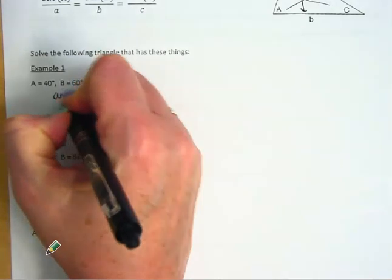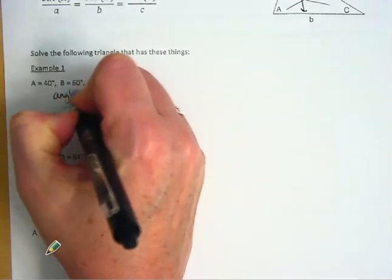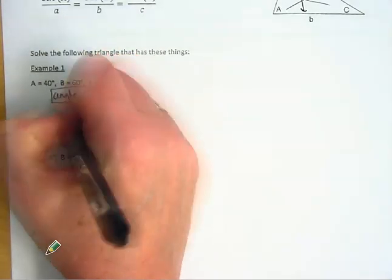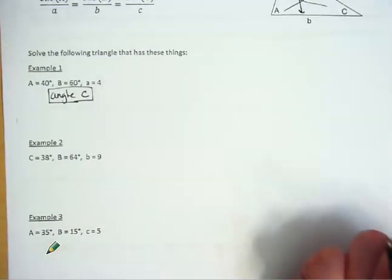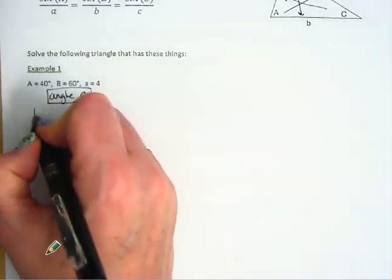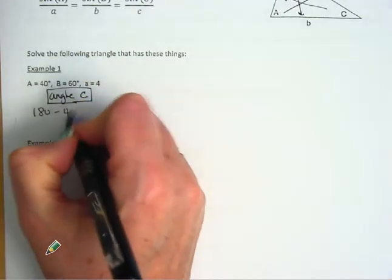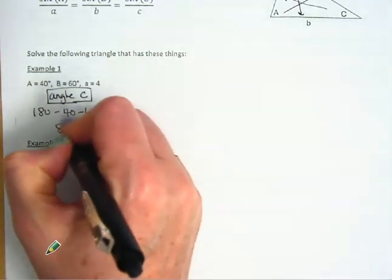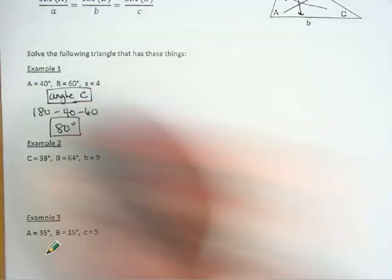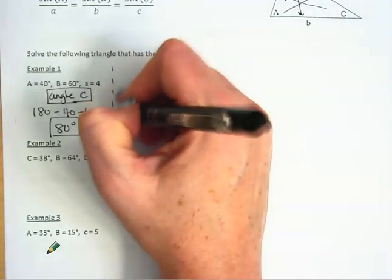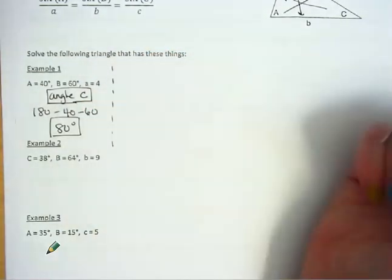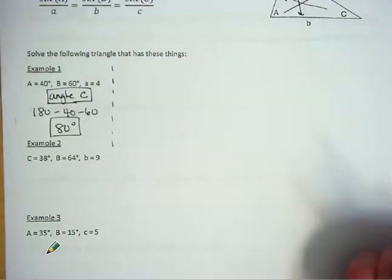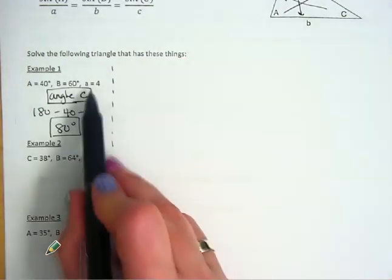I'm going to start by finding angle C first because since I'm already given two angles, I just need to subtract those from 180, and that's going to give me 80 degrees for angle C. Now I'm going to move on to finding the other sides.